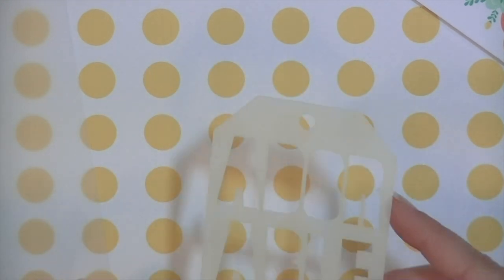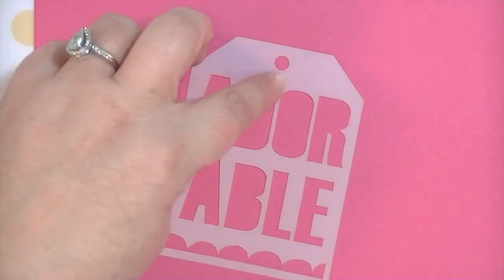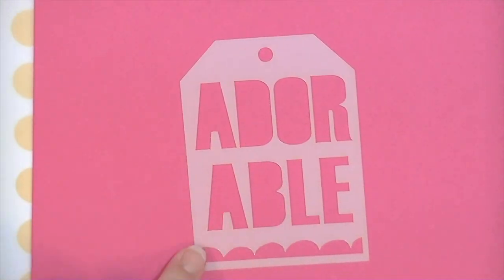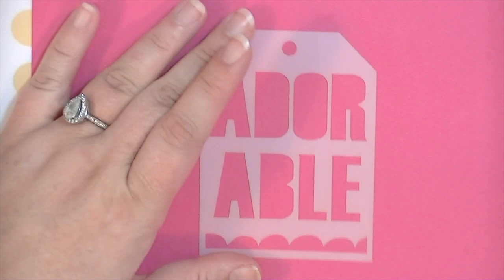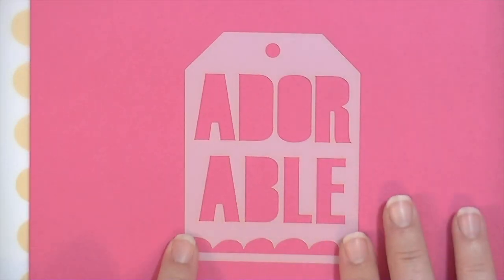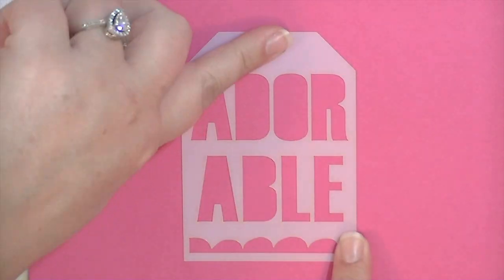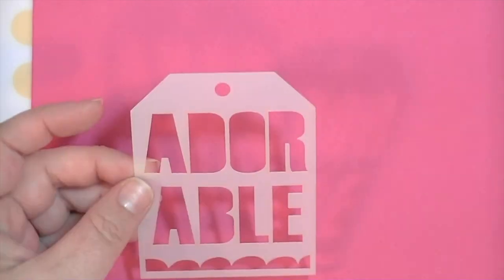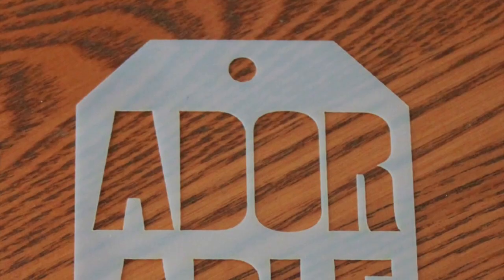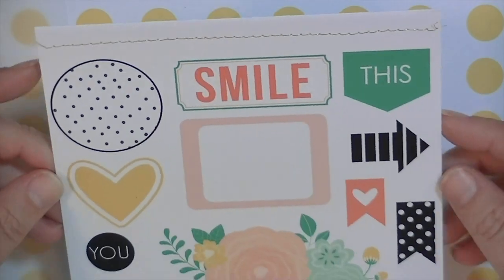Some cute little die cut pieces, gold die cut pieces, and then this awesome stencil which says adorable. I think this is so fun because you could use this in so many different ways. You could completely mask off the center and just use it as a tag shape, or you could just use the adorable part or just the scallop part. It's like a three or four in one stencil depending on which parts you mask off and which parts you use. Here's a close-up of what that looks like. It's really cute.